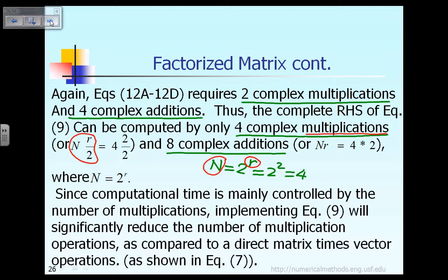In this particular example, r equals 2, so for the general case with n data points, the number of multiplications is n times r over 2, which gives 4 times 2 divided by 2, equaling 4 multiplications. The number of additions is n times r; applying to this specific case with n equals 4 and r equals 2, we get 8 additions.